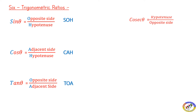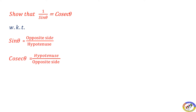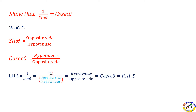If sine is related to cosecant, then 1 by sin θ is equal to cosecant θ. We know that sin θ is equal to opposite by hypotenuse, and cosecant θ is equal to hypotenuse by opposite. Therefore, 1 by sin θ equals cosecant θ.